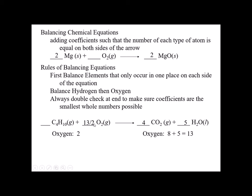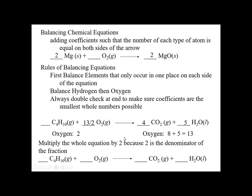I cannot leave a fraction in a chemical equation. To get rid of a fraction, you multiply by the denominator — but I can't multiply just that one term, I have to multiply the whole equation by two. So: the hydrocarbon gets coefficient two (1×2), oxygen becomes 13 (13/2 × 2), CO2 becomes eight (4×2), and water becomes ten (5×2). The last step is to confirm no common factor divides all coefficients — 13 is not divisible by two, so 2, 13, 8, 10 is the final balanced equation.